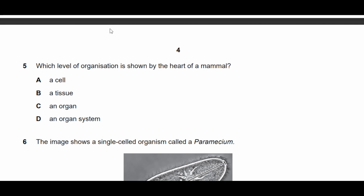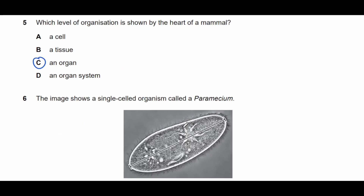Question five: which level of organization is shown by the heart of a mammal? A heart is an organ, therefore the answer is C.